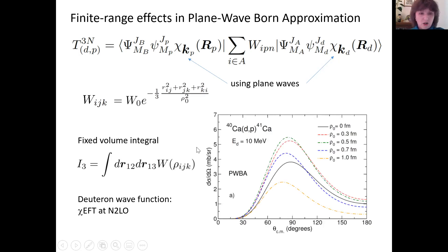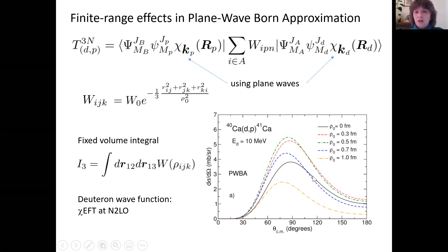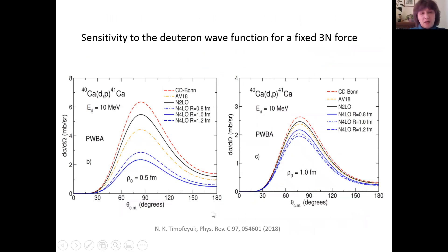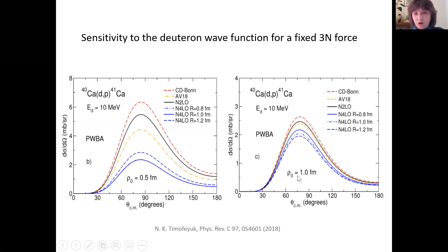For the deuteron wave function, we use the chiral EFT at N2LO. In the plane-wave Born approximation for zero range, we obtain a specific cross section. When we increase the radius of interaction, the cross section first increases and then decreases again. For smaller range (e.g., 0.5 fm), there is a huge spread in the cross section depending on the choice of two-body model for the deuteron. For larger range, this spread becomes smaller, since a larger-range potential probes the deuteron wave function further from zero, where all models converge.